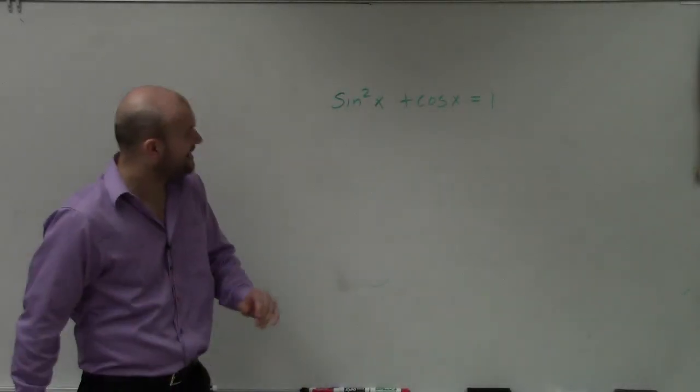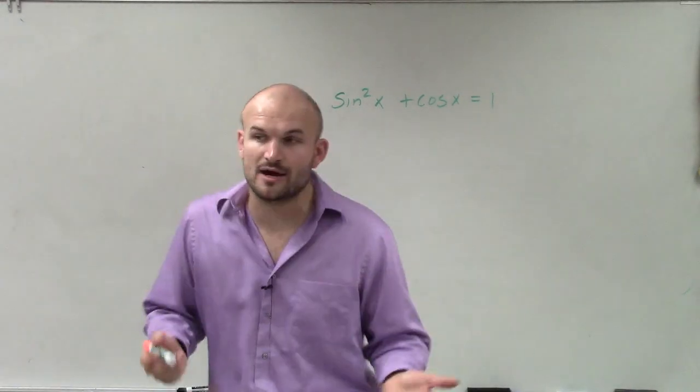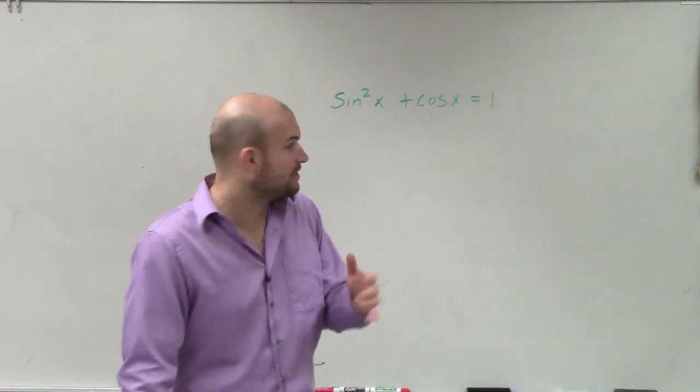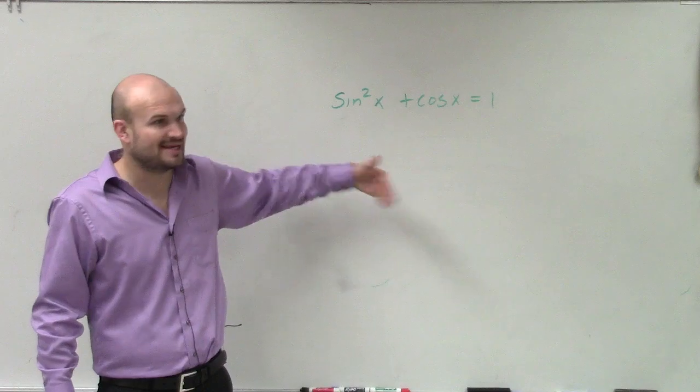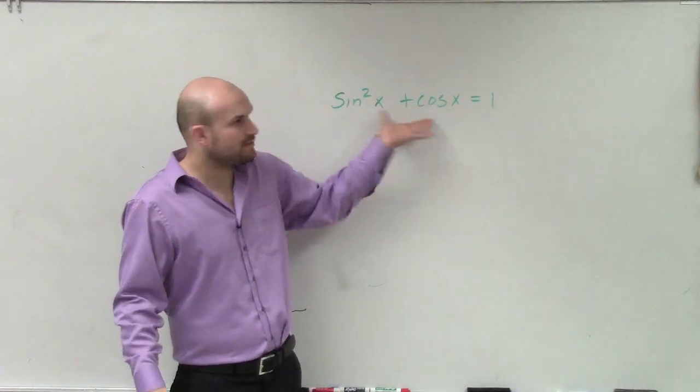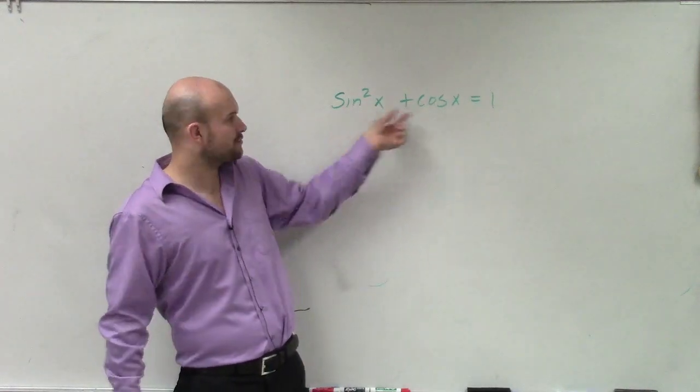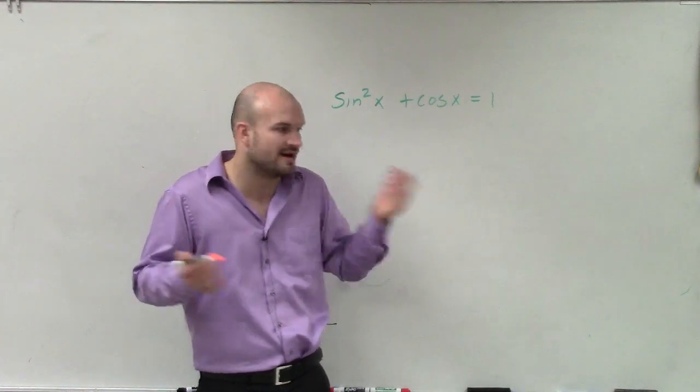So in this example, I have sine squared of x plus cosine of x equals one. Automatically, what I would want to do for this is try to see if I could factor. Unfortunately, sine and cosine do not have the same common terms, so I can't factor anything out. I can't solve for it because which x are you going to solve for? Think of that as like x squared plus y. You can't simplify it like that.